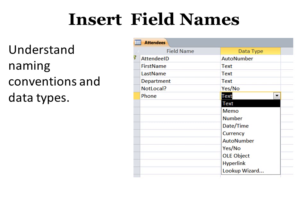To insert field names we do it in design view, and this is where we need to know naming conventions. For example, AttendeeID — no spaces, but both 'Attendee' and 'ID' are capitalized. We often call that camel case, meaning the first letter of each word is capitalized but there are no spaces. Our goal is to be consistent. In Access you can put spaces in field names — it is allowed — however it's not a good idea. In case you want to upgrade to a larger database like SQL, which does not allow spaces, that could be a problem. Also when you're writing code, spaces in field names are a problem.